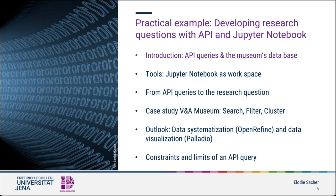First we will turn to the link between APIs and the databases of museums — that is, why museums allow access to their databases via API queries. After that we will get to know our workspace for today's lesson. In the second part of the tutorial we will use the V&A museum, the Victoria and Albert Museum in London, as an example to pose research questions as API queries in Jupyter Notebook. At the end I will give an outlook on how the data obtained through API queries can be transferred to other digital tools such as OpenRefine and Palladio to refine data sets and visualize certain aspects, as well as highlight the limitations of this research method.